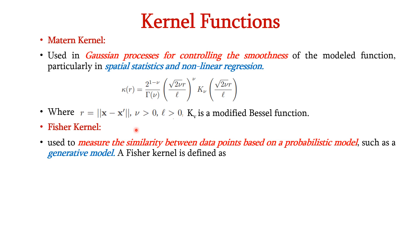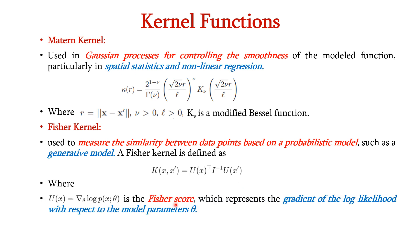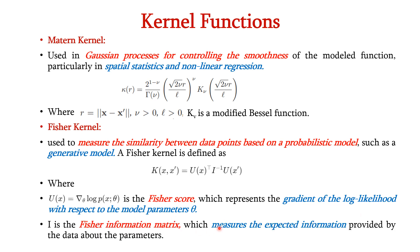Lastly, we have the Fischer kernel. This is used to measure the similarity between data points based on a probabilistic model such as a generative model. The Fischer kernel is defined as K of x comma x dash is equal to u of x transpose into I inverse into u of x dash. Here, u of x is the Fischer score, which represents the gradient of the log likelihood with respect to the model parameters theta. And I is the Fischer information matrix, which measures the expected information provided by the data about the parameters. Thus, we have seen various kernel functions in this lecture.